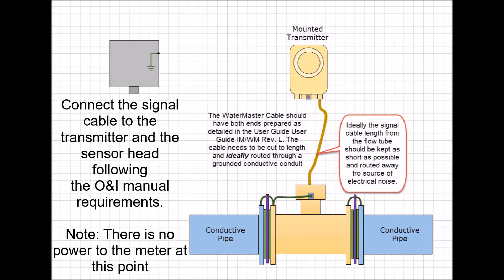The flow tube signal cable should be prepared as specified in the WaterMaster user manual. The cable should be routed through its own conductive conduit for optimal noise suppression with no other wiring or cables. The cable length should be kept as short as possible. Looping excess cable and splicing additional cable is prohibited. All wiring on the meter must be performed with power disconnected from the meter.